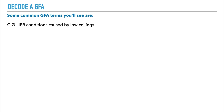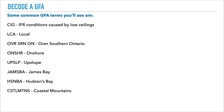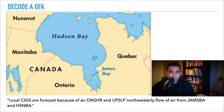Some common GFA terms: CIG stands for IFR conditions caused by low ceilings; LCA means local. Other terms refer to over southern Ontario, onshore upslope, James Bay, Hudson's Bay, and coastal mountains. A common phrase you might see is: local ceilings are forecast because of an onshore and upslope northwesterly flow of air from James Bay and Hudson's Bay.